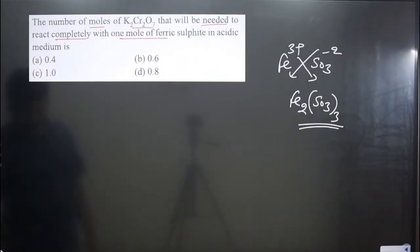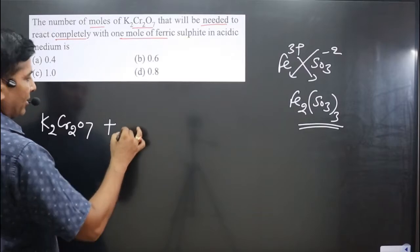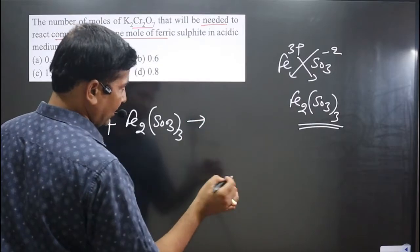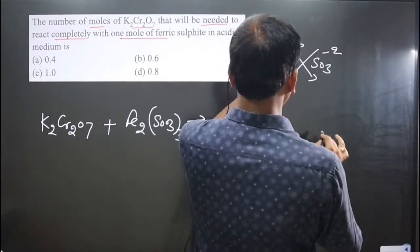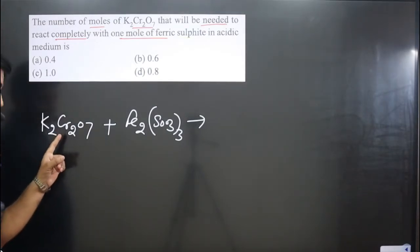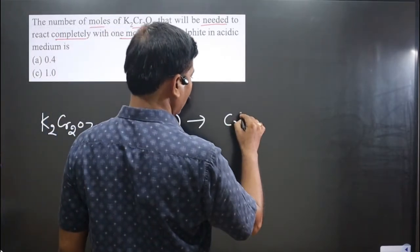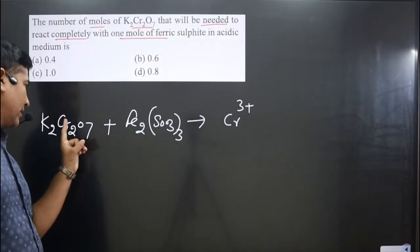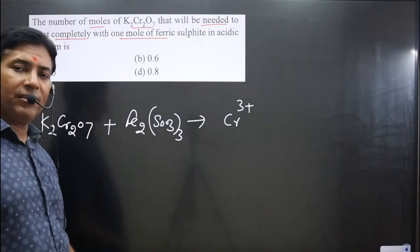Now we can write down the chemical reaction: K₂Cr₂O₇ reacting with Fe₂(SO₃)₃ in acidic medium. In acidic medium, potassium dichromate always converts into Cr³⁺. K₂Cr₂O₇ is a strong oxidizing agent, so it will be oxidizing the ferric sulfite.